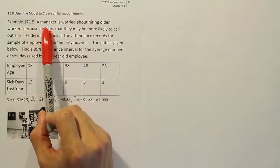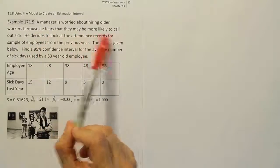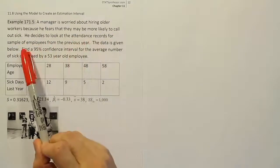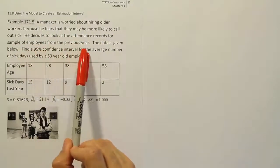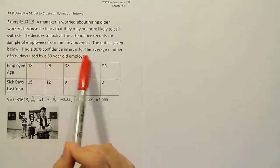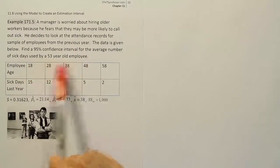Example 171.5. A manager is worried about hiring older workers because he fears that they may be more likely to call out sick. He decides to look at the attendance records for a sample of employees from the previous year. The data is given below. Find a 95% confidence interval for the average number of sick days used by a 53 year old employee.